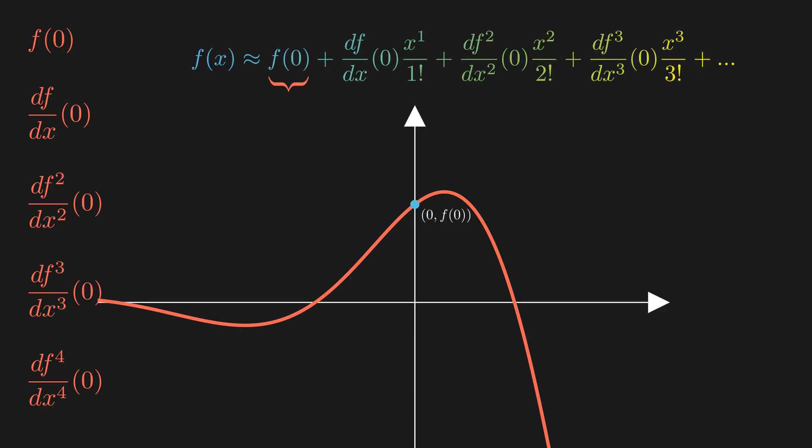Here, the f of 0 term ensures that the polynomial passes through the same value as the function at 0. The next term ensures that the slope, the first derivative, is also the same. The second derivative term is added to make the curvature match as well. By adding these terms one by one, the polynomial imitates the function's behavior with increasing precision. The more terms you include, the better the approximation becomes.